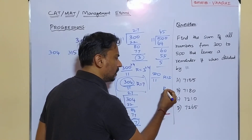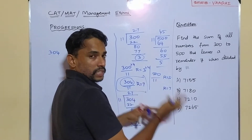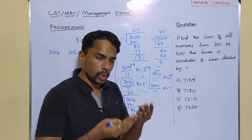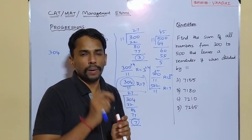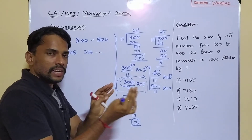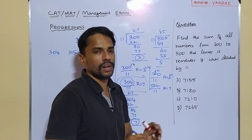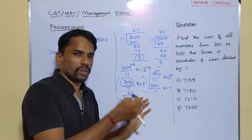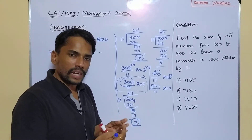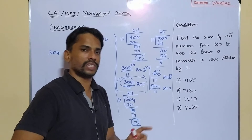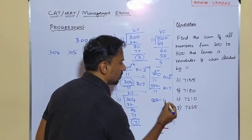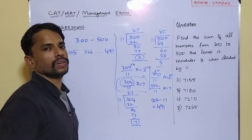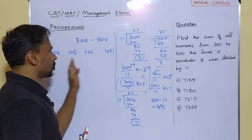Since dividing 500 by 11 gives remainder 5, and we need remainder 7, we'd add 2, giving 502. But 502 is greater than 500, which is outside our range. So we subtract 11 from 502 to get 491, which is just less than 500. Therefore, 491 is the last number that satisfies the condition.